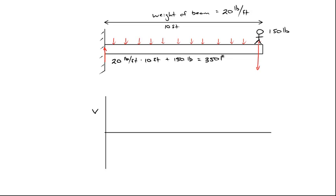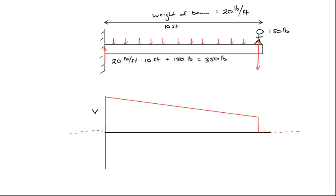That's a total force of 350 pounds supporting the beam and the person. Just like before, the shear force has to be zero for any x less than zero, and zero anywhere to the right of the beam. On the left side we have an upward force of 350 pounds, so we come up to 350 pounds. We connect across to 150 pounds with a constant slope, because the slope is equal to negative 20 pounds per foot over the 10-foot span. So the shear drops from 350 down to 150 pounds.